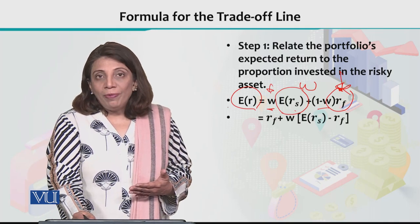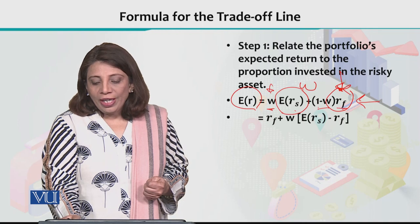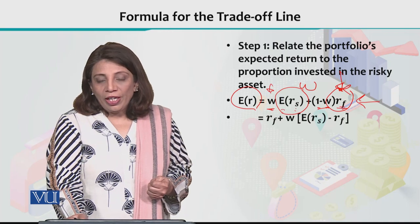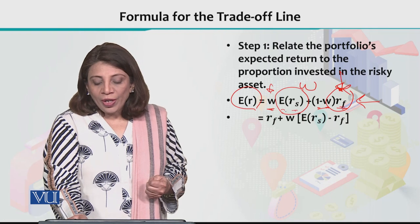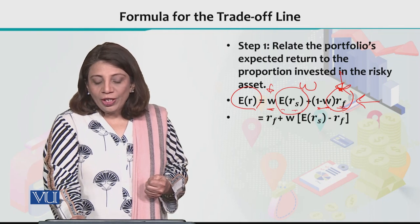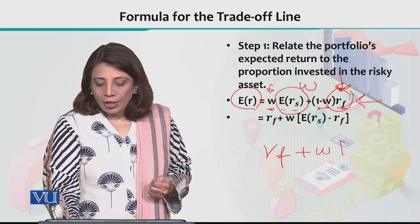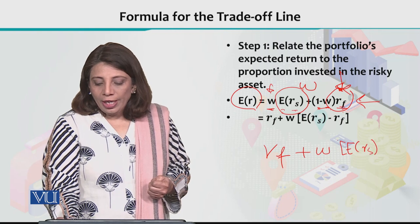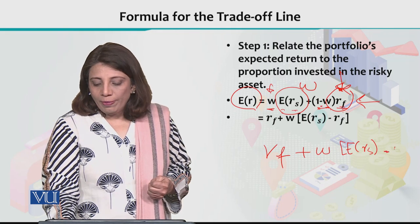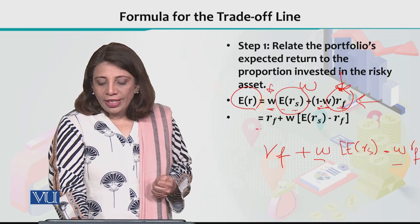If we develop and simplify this equation: RF is multiplied by 1, and RF is also multiplied by W, while W is multiplied by the expected value of the risky return ERS. Simplifying by taking W as common, we get: ER equals RF plus W times (ERS minus RF). This is the equation of the trade-off line.